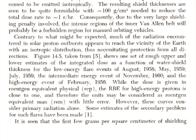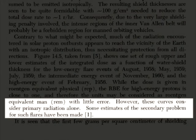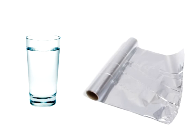It even says so two pages earlier: 'These curves consider primary radiation alone. Some estimates for the secondary problem for such flares have been made.' An 8 gram per square centimetre shield may very well be able to bring the primary dose from the August 22nd 1958 flare down to 1 rem per hour, regardless of whether it was water or aluminium. But the advantage of water is the fact that it is effective at absorbing the secondary radiation. Aluminium is not — it only increases the risk of particle fragmentation.